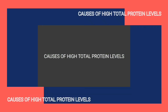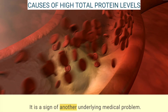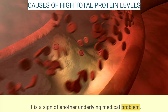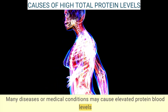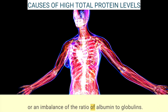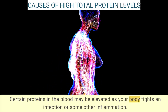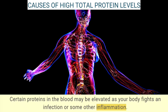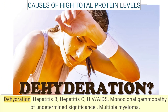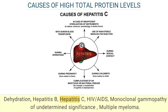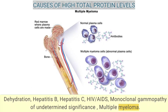High blood protein is not a disease itself — it is a sign of an underlying medical problem. Many diseases or medical conditions may cause elevated protein levels or an imbalance of the albumin-to-globulin ratio. Certain proteins may be elevated as the body fights an infection or inflammation. These conditions include amyloidosis, dehydration, hepatitis B, hepatitis C, HIV/AIDS, monoclonal gammopathy of undetermined significance, and multiple myeloma.